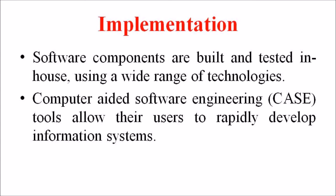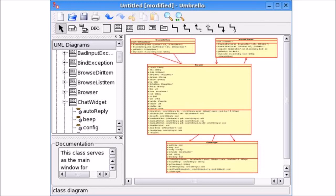Finally, regarding the implementation phase: implementation means software components are built and tested in-house using a wide range of technologies. Computer-Aided Software Engineering — CASE — tools allow users to rapidly develop information systems. The main goal of CASE technology is the automation of the entire information systems development lifecycle process using a set of integrated software tools such as modeling, methodology, and automatic code generation. The code generated by CASE tools is only the skeleton of an application, and a lot needs to be filled in by the programming team handling the project.